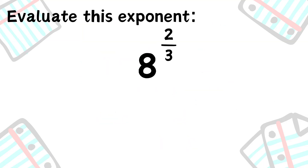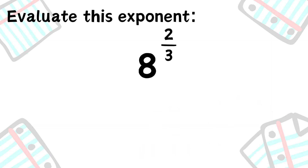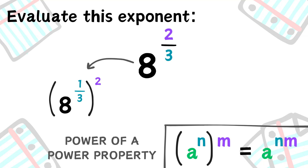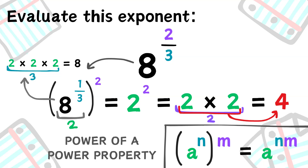What about 8 to the power of 2 thirds? We can use the power of a power property to rewrite this as 8 to the power of 1 third, to the power of 2. First, we find the cube root of 8 — what number multiplied by itself 3 times is 8? That's 2. Replacing 8 to the power of 1 third with 2, we now have 2 to the power of 2. 2 squared is 4, so 8 to the power of 2 thirds is 4.